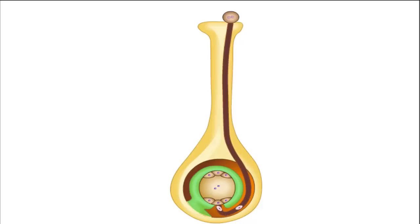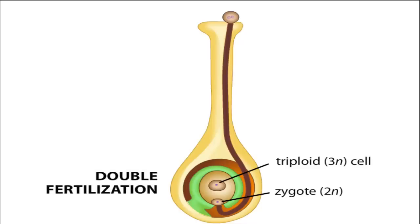One fertilizes the egg, forming a diploid zygote. The other fertilizes two polar nuclei, forming a triploid cell. The fertilization of both the egg cell and the central cell is called double fertilization, a hallmark of the life cycle of angiosperms.